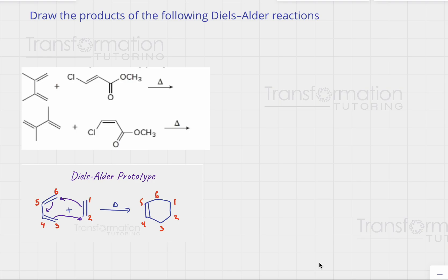Draw the products of the following Diels-Alder reactions. What is a Diels-Alder reaction? This is a reaction between a diene and dienophile under heat conditions that produces a cyclohexene.